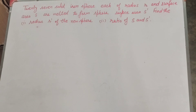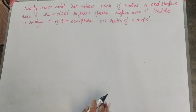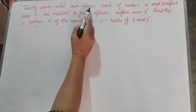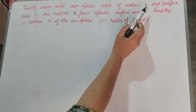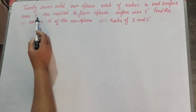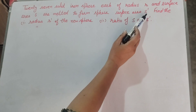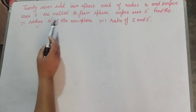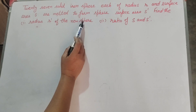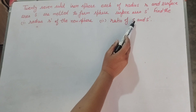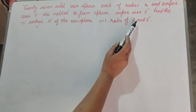Hello friends, welcome to my channel. In this video we discuss 27 solid iron spheres, each of radius r and surface area s, are melted to form a sphere of surface area s'. We find radius r' of the new sphere and the ratio of s and s'.